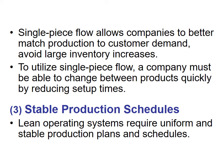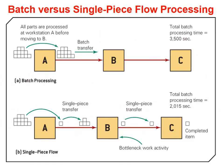Stable production schedules: lean operating systems require uniform and stable production plans and schedules. In batch processing, all parts are processed at work station A before moving to B, with transfer at the batch level. The total batch processing time equals 3,500 seconds. In single piece flow, we transfer product piece by piece, which decreases the total batch processing time to 2,015 seconds and decreases the bottleneck work activity.